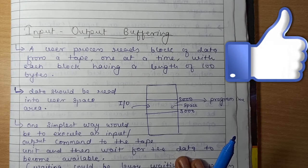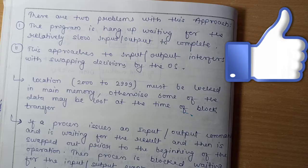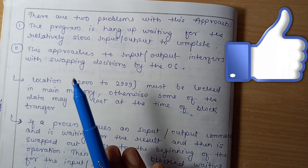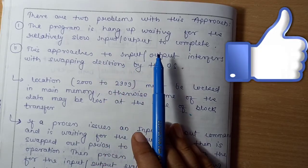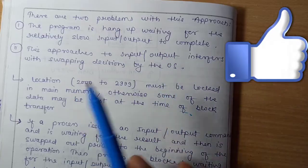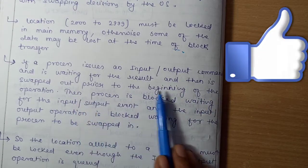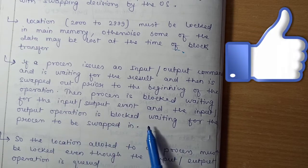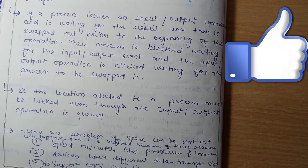There are different types of buffering. The speed of the disk is very high — if the CPU does not attend to incoming data from the disk, the second block of data may override the last one. So we need a buffer where all data of the buffer size can be stored. Once data is stored in main memory, that location must be locked; otherwise some data may be lost during block transfer. If a process issues an IO command and is waiting for the result, and is then swapped out prior to the operation beginning, the process is blocked waiting for the IO event, and the IO operation is blocked waiting for the process to be swapped back in.